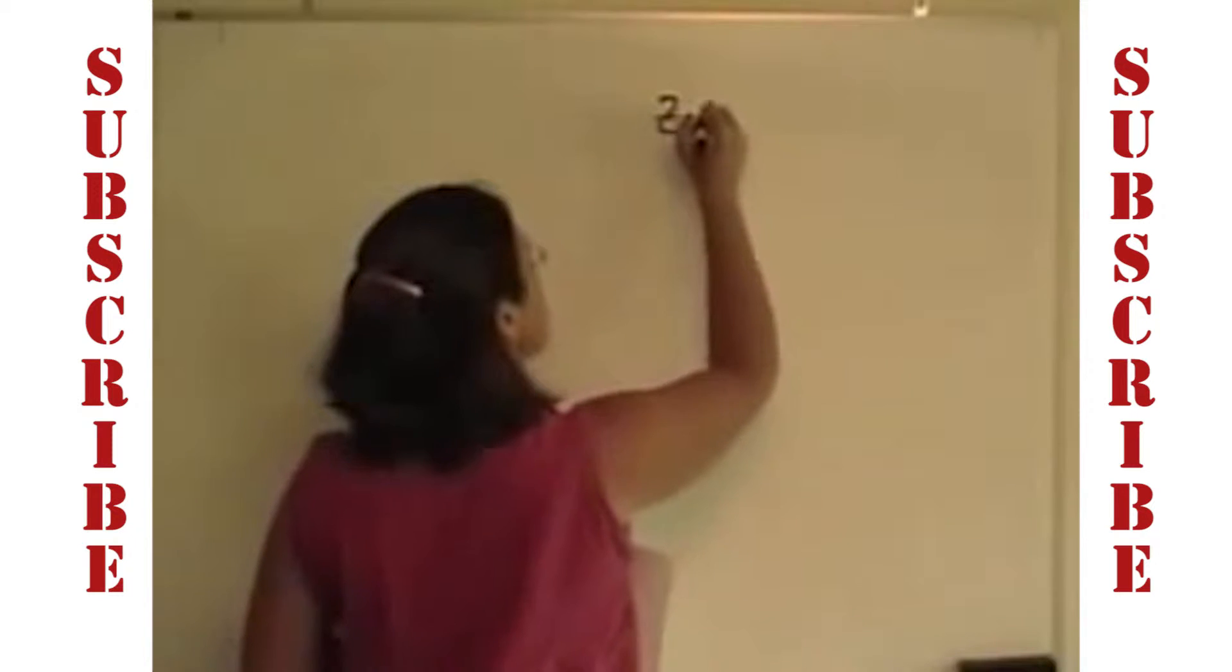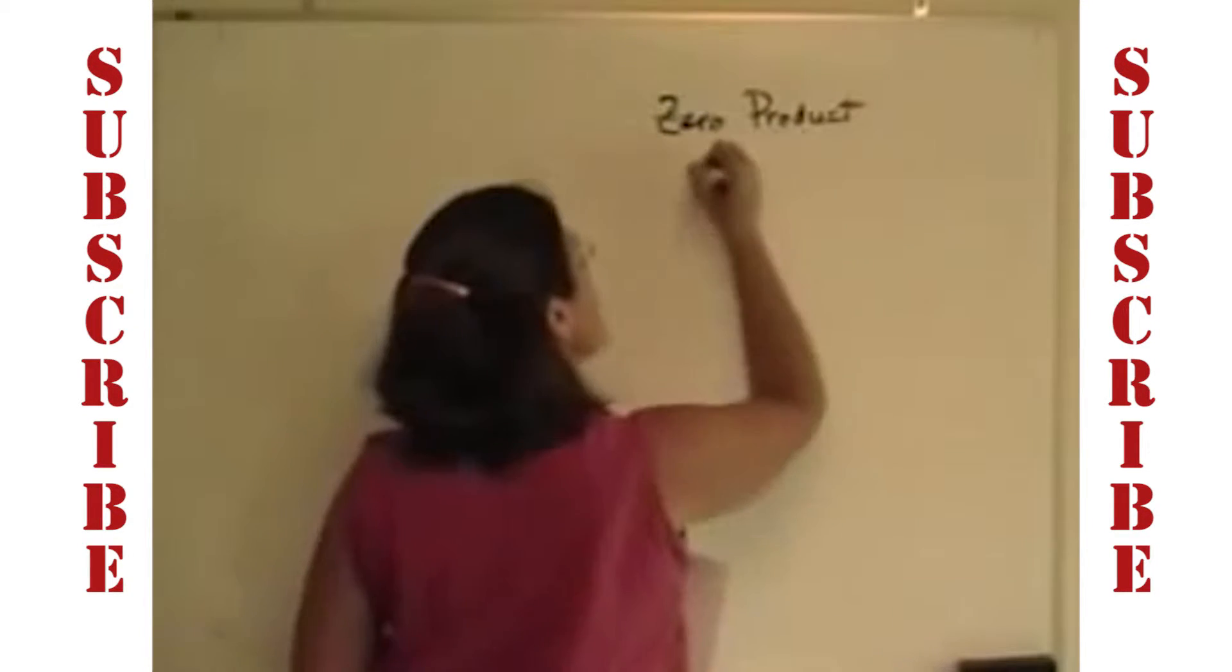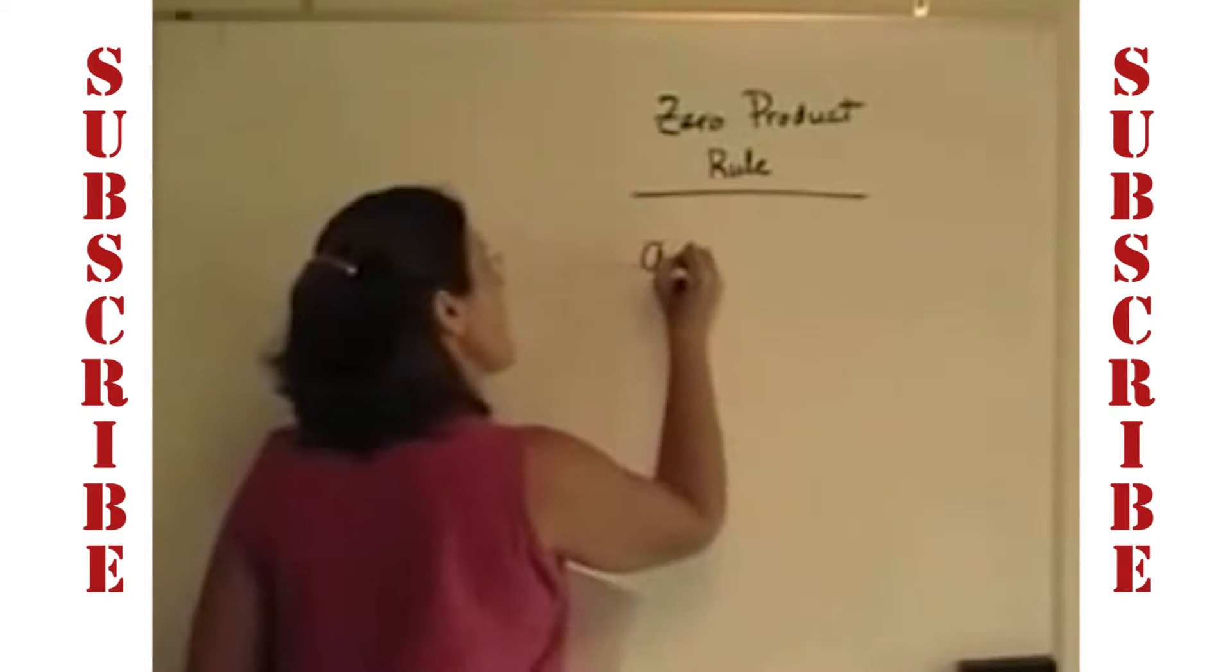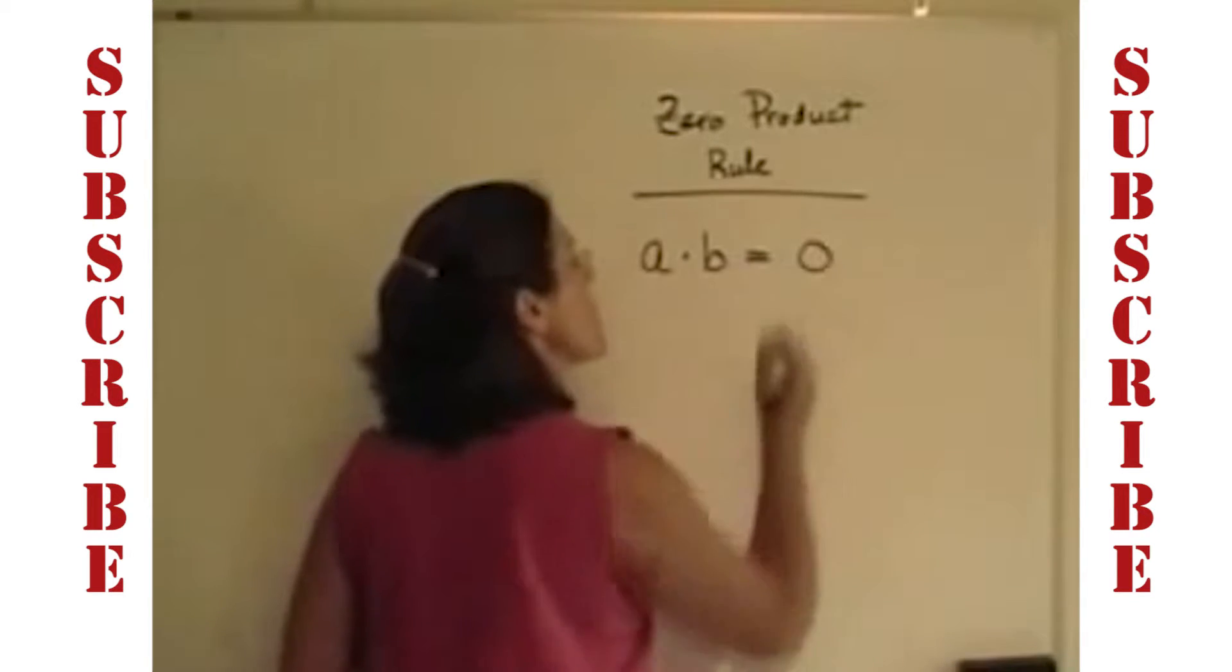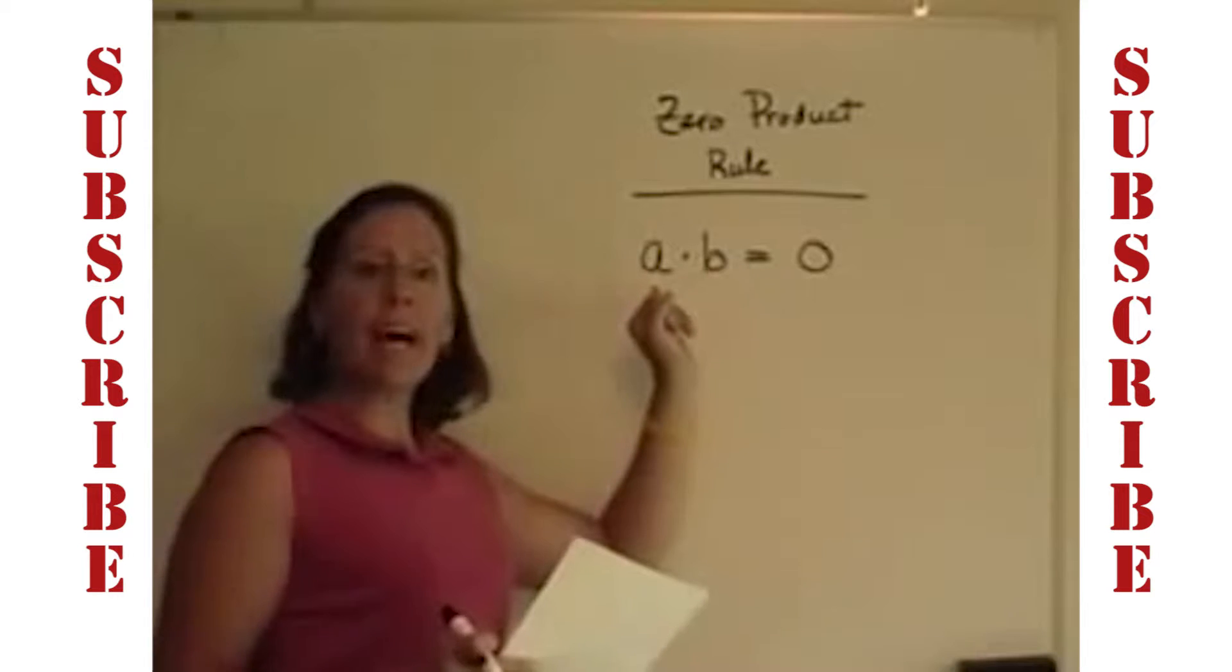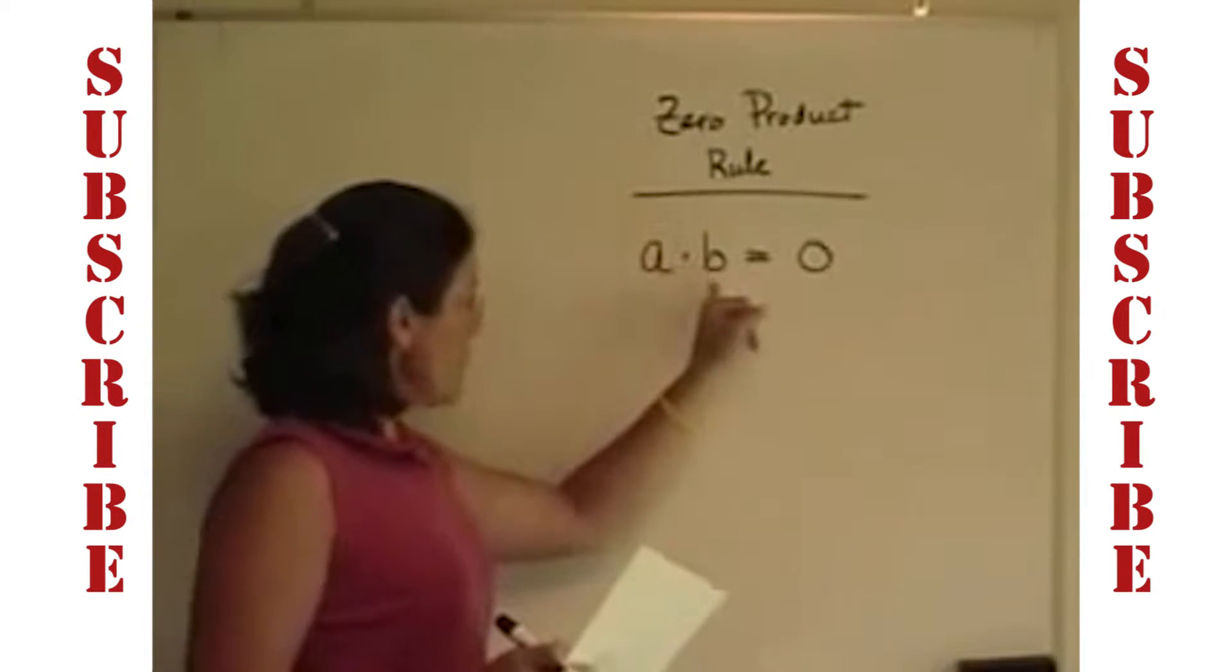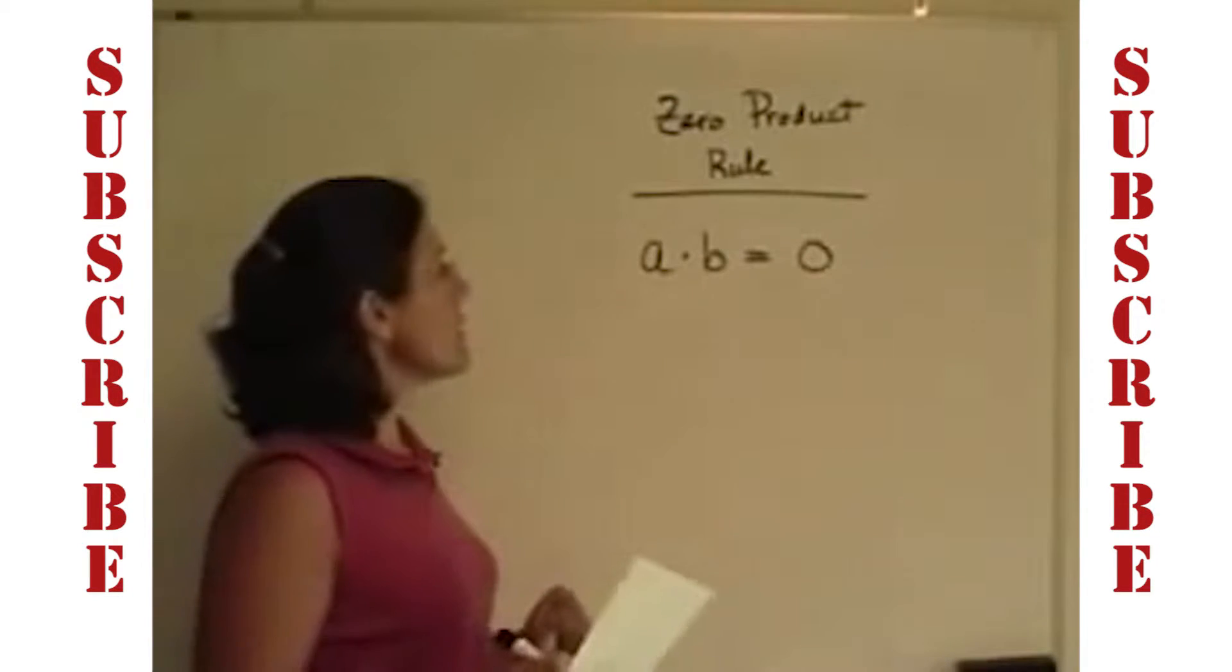The zero product rule says that if you have two or more factors, and I'm going to say A times B, two or more factors that are equal to zero, then for this statement to be true, at any given time, either A has to be equal to zero, or B has to be equal to zero, in order for you to multiply these together to get zero.